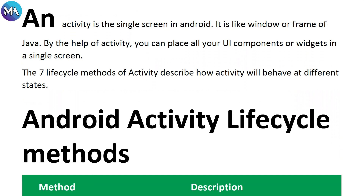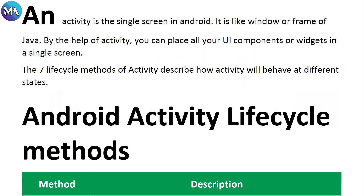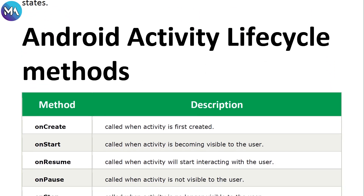An activity is a single screen in Android — it is like a window or frame in Java. In previous sections we made a lot of apps, and every time we run one we have a window or frame in front of us. By the help of activity you can place all your UI components or widgets in a single screen.